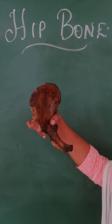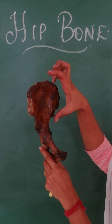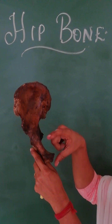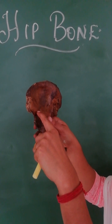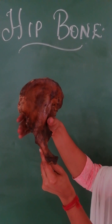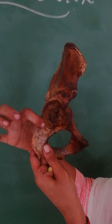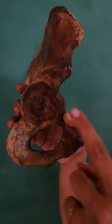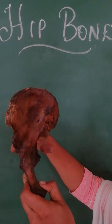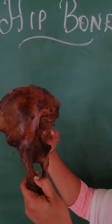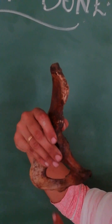The hip bone has three parts: ilium in the upper part, pubis anteriorly in the lower part, and ischium posteriorly. In the lateral aspect, you have the acetabulum, which must face laterally. When holding the hip bone, place your thumb on the inner side of the greater sciatic notch — a notch seen in the posterior aspect — and cover the acetabulum with your other fingers.